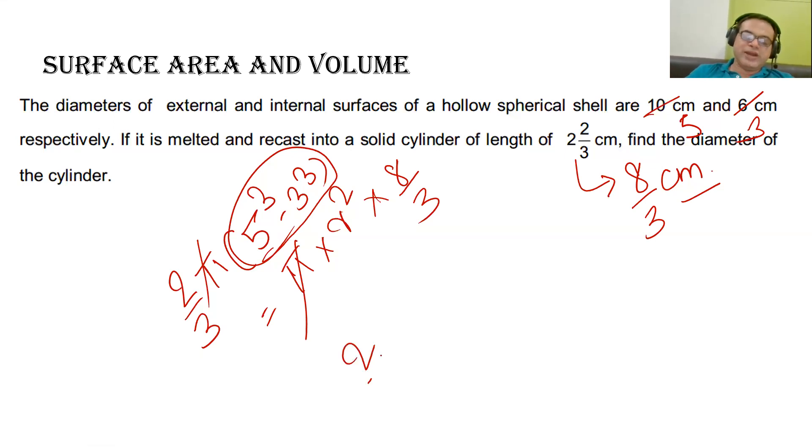So this will be 2 by 3 multiplied by 98. I will write this 98 as 49 into 2. Why I am doing?